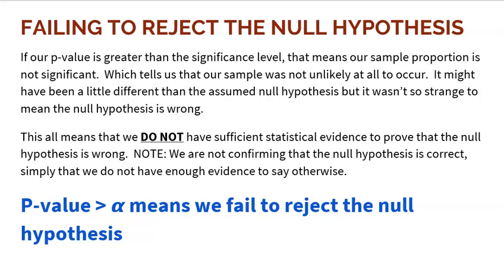The flip side is that you could fail to reject the null hypothesis. This happens when our p-value is greater than the significance level. That means our sample proportion is not significant — it's pretty normal. Our sample was not unlikely to occur at all. It might have been a little different than the assumed null, but not so strange as to mean the null is wrong.